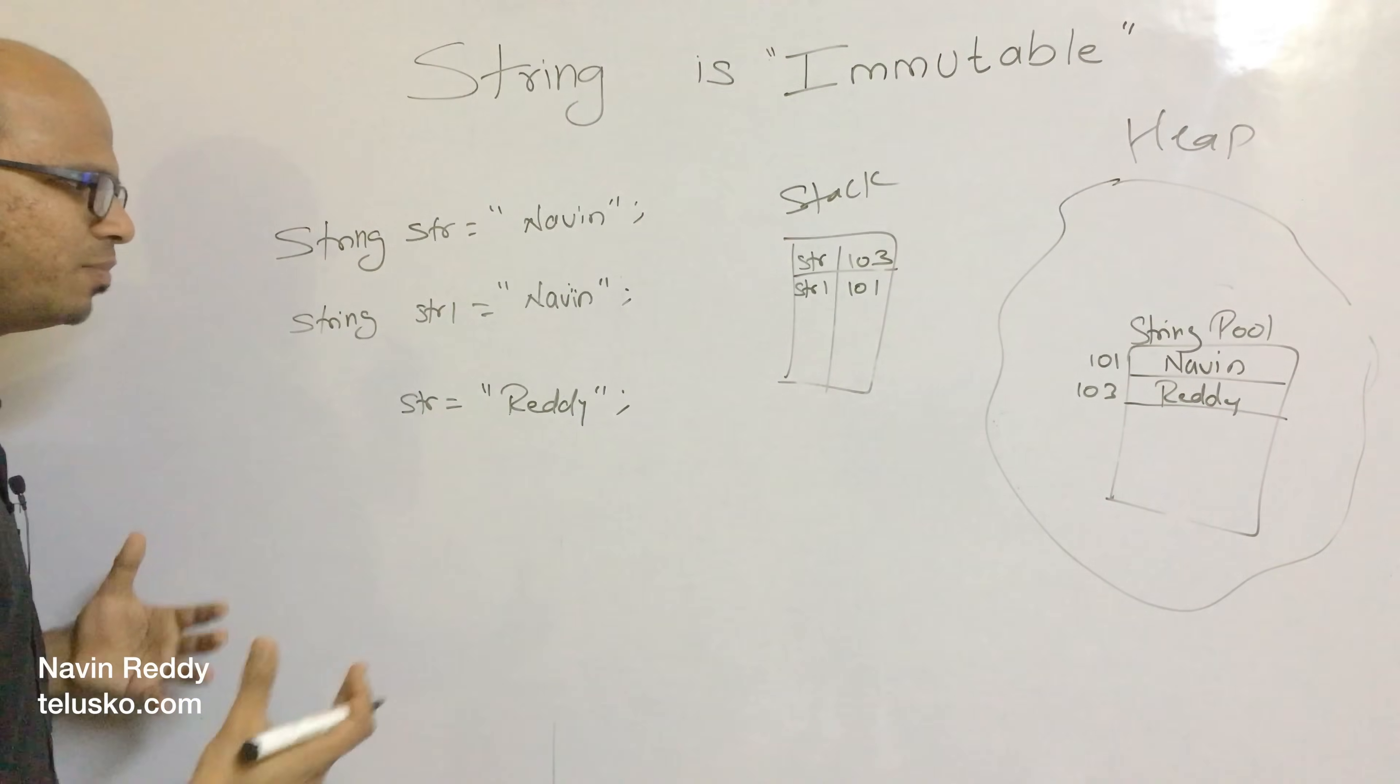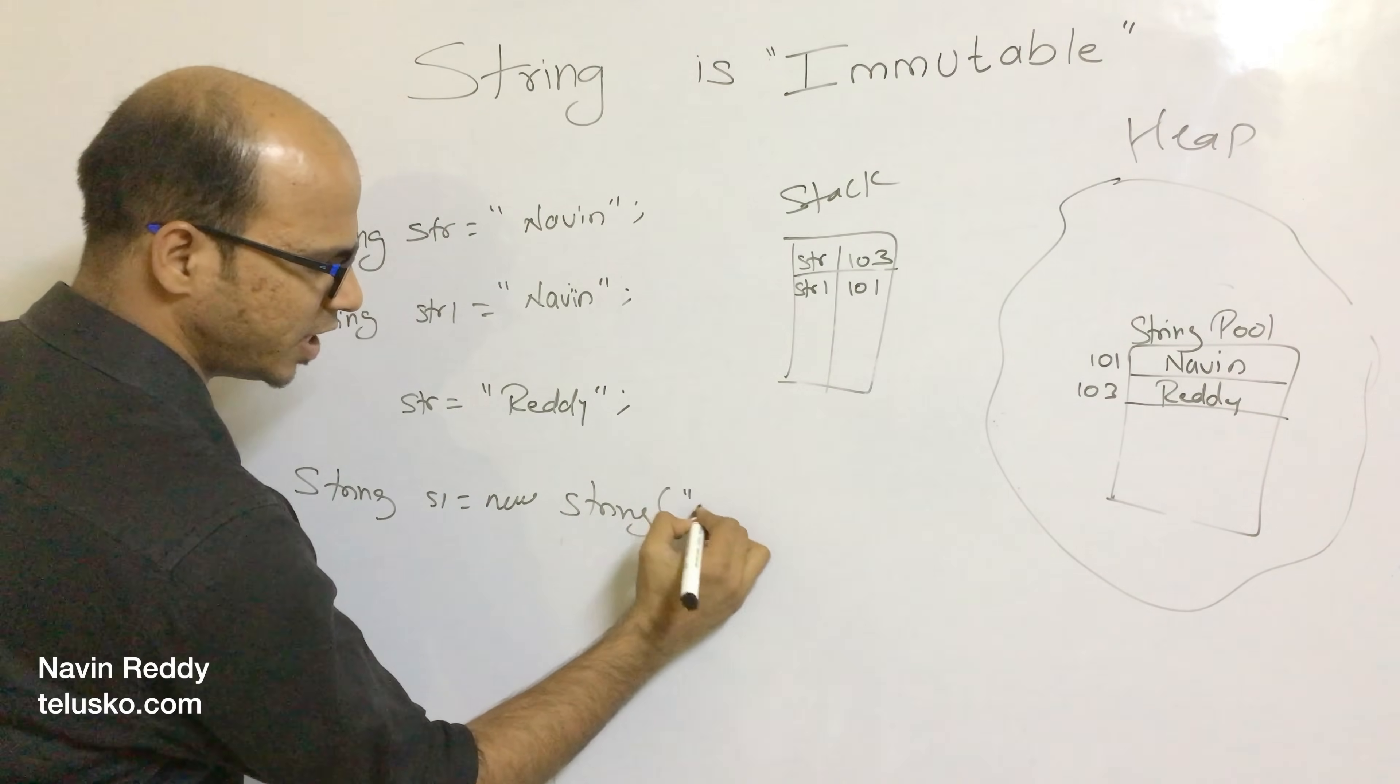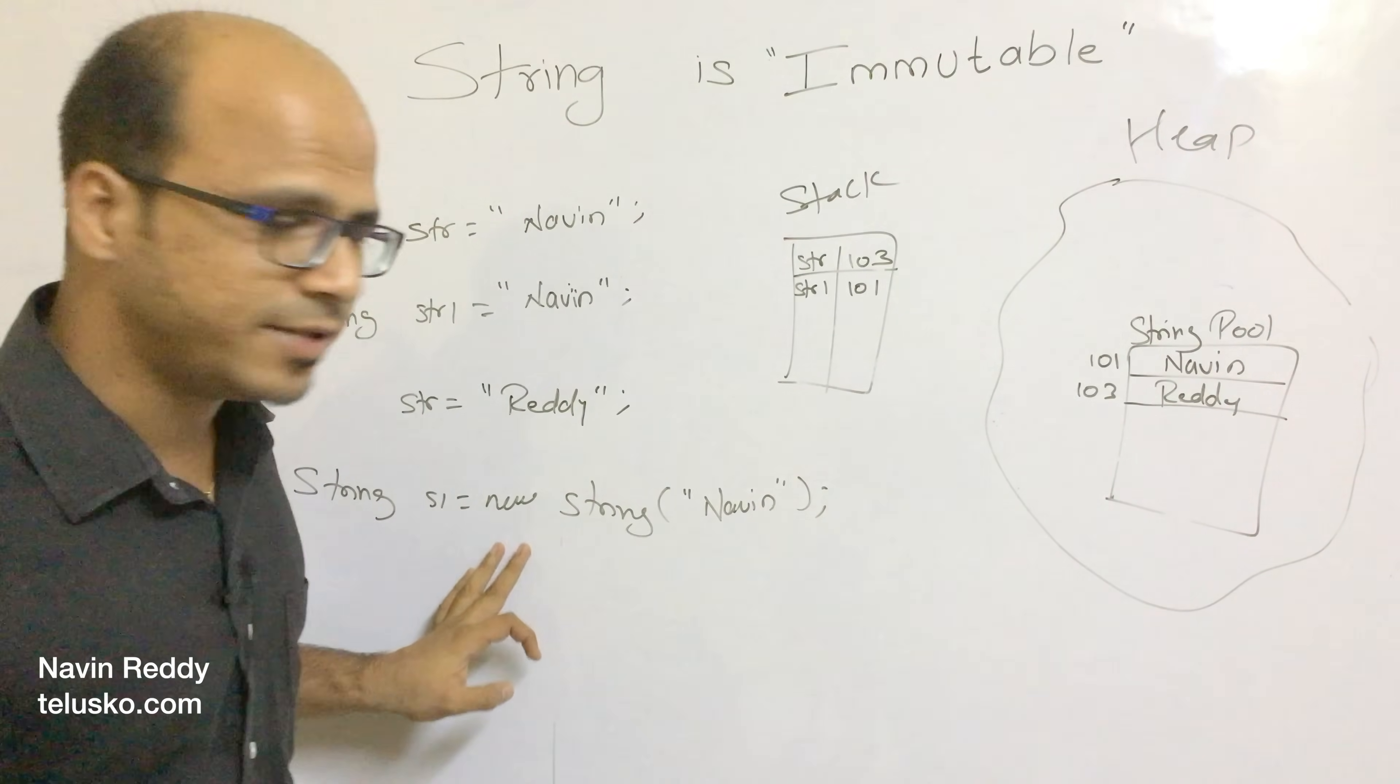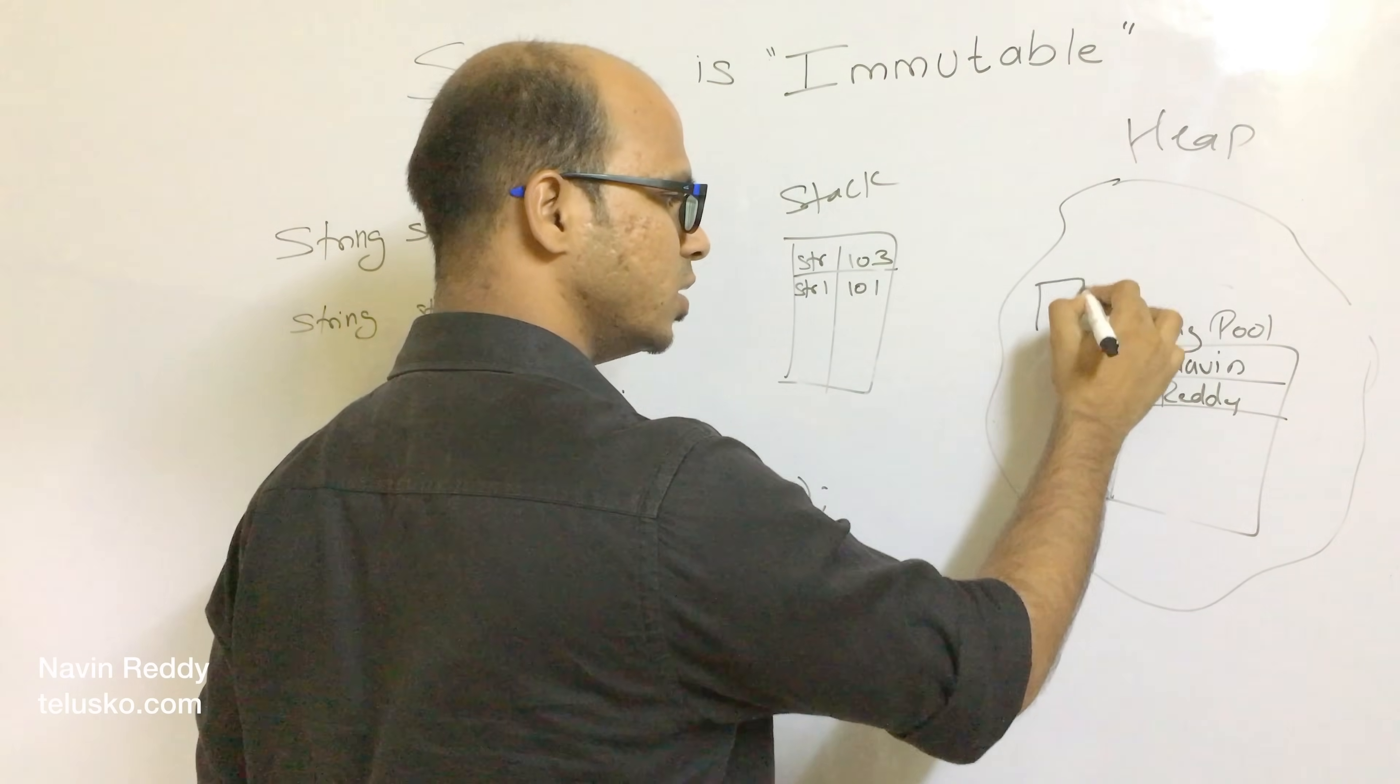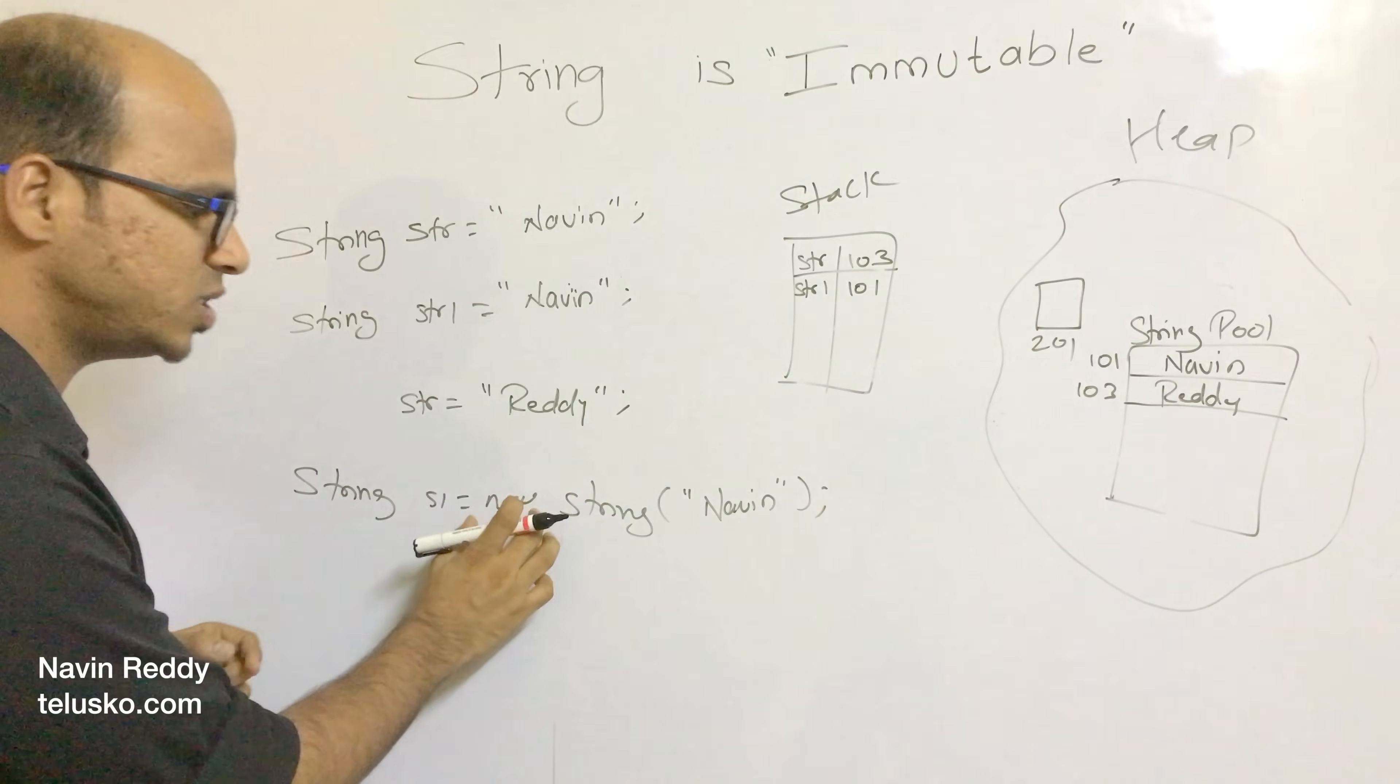But then a question arises: we have one more way of creating string. We can say string S1 equals new String and pass Naveen. When you use the new keyword, it will not use string pool memory. It will create a new object with address 201. Because you are saying new, new will not take the memory from string pool. It will use the memory of heap.